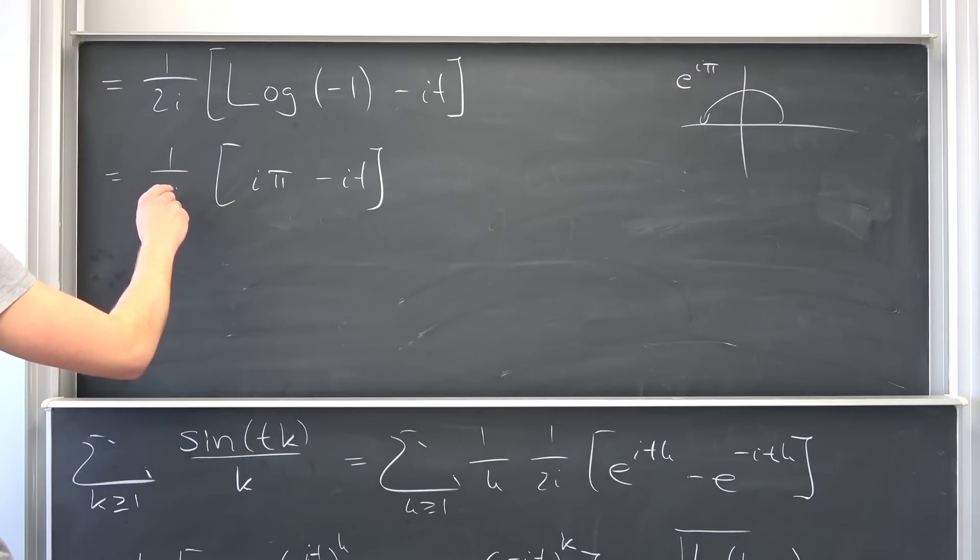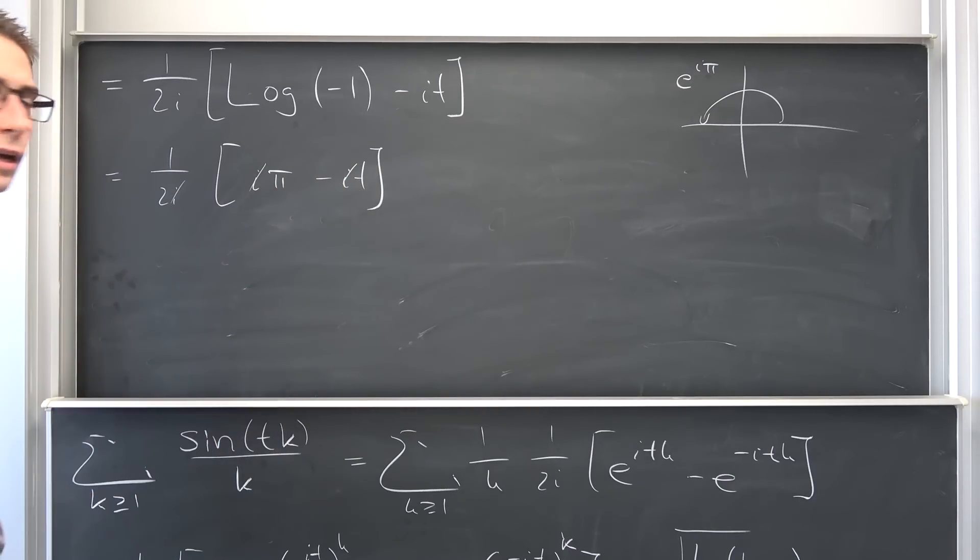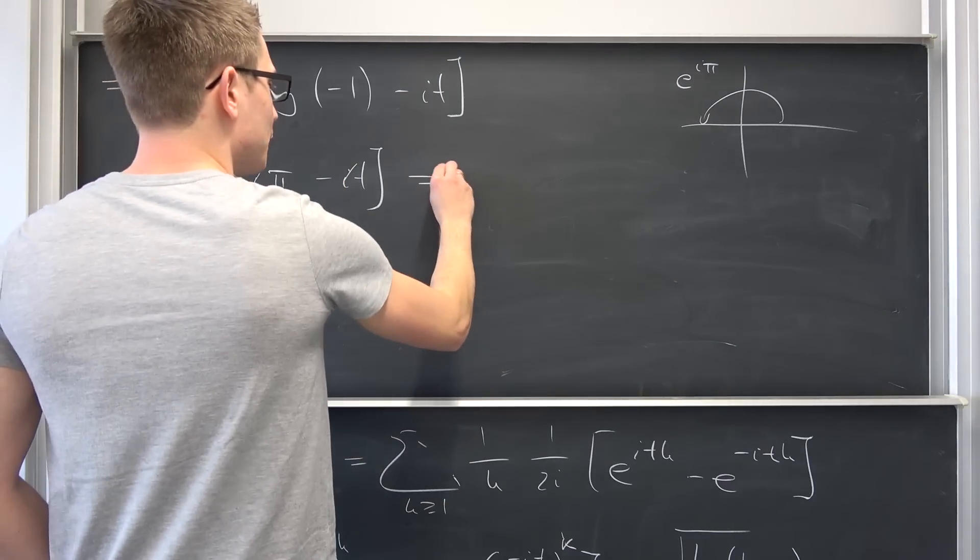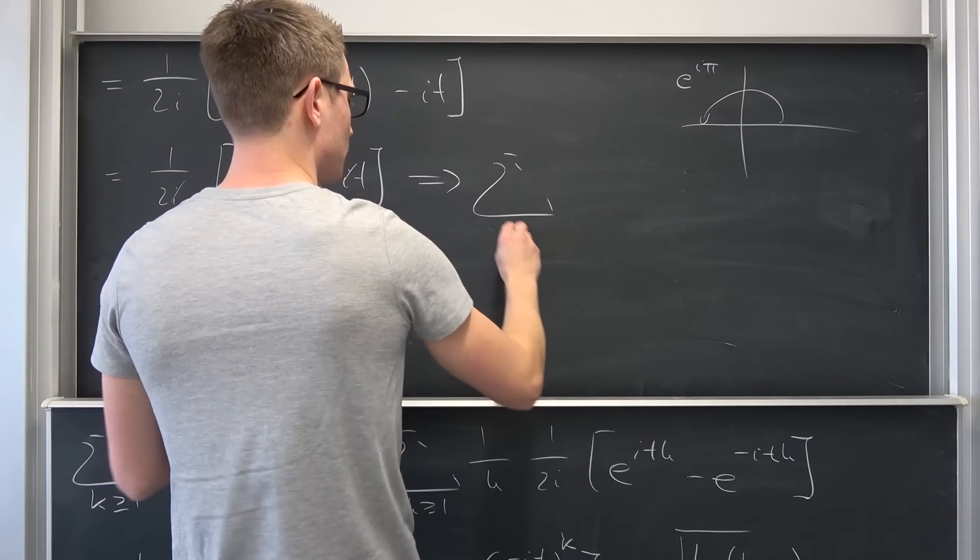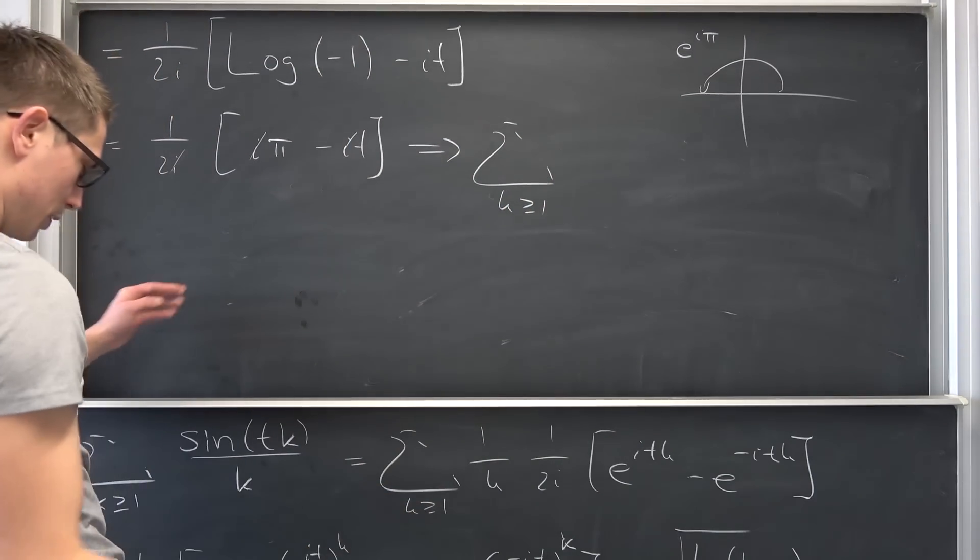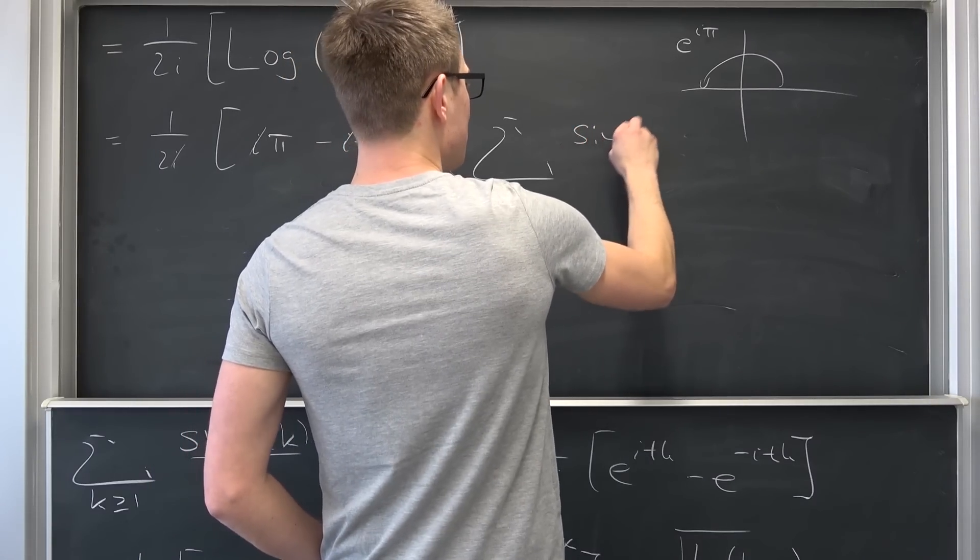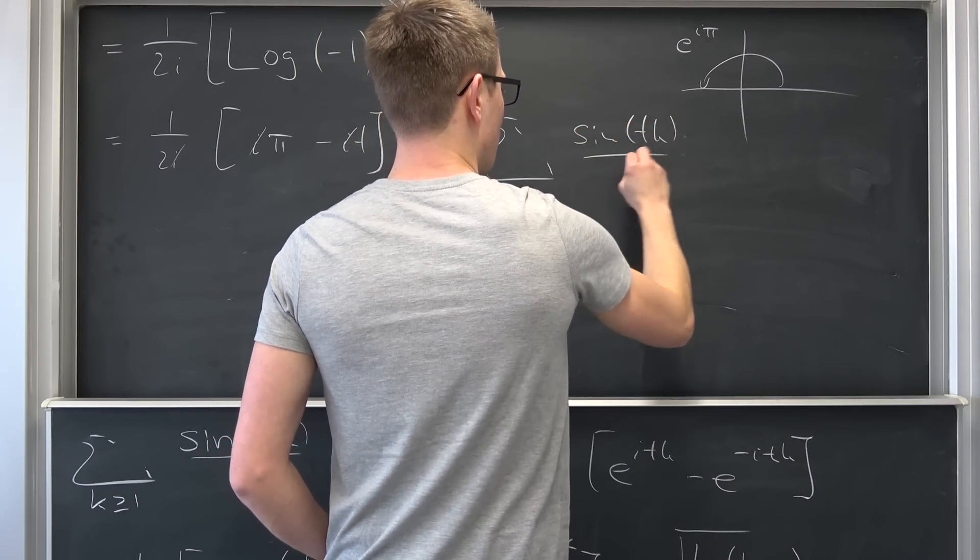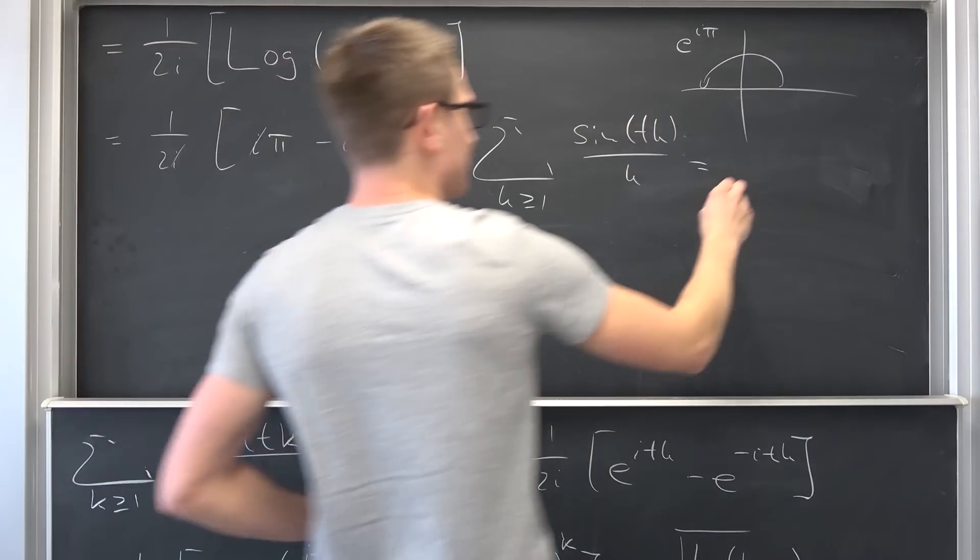This is just a principal branch of the logarithm of negative 1. So 1 over 2i and then we are going to get i pi minus it. Let us cancel out the i's. And what we get overall is that our summation k being greater or equal to 1 of sine tk over k